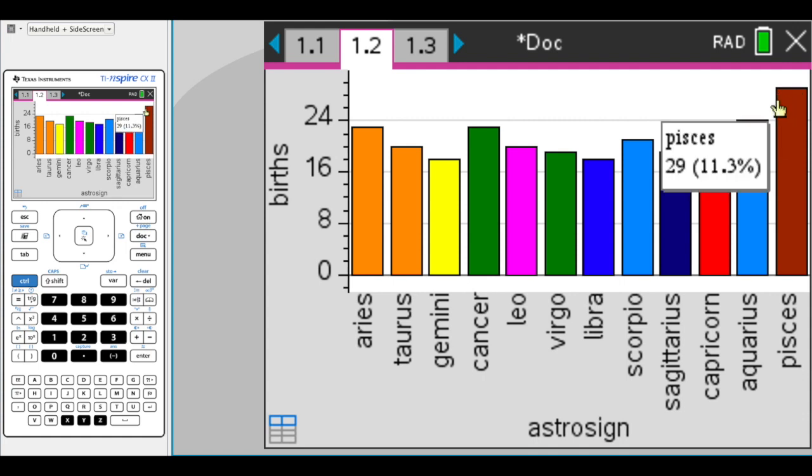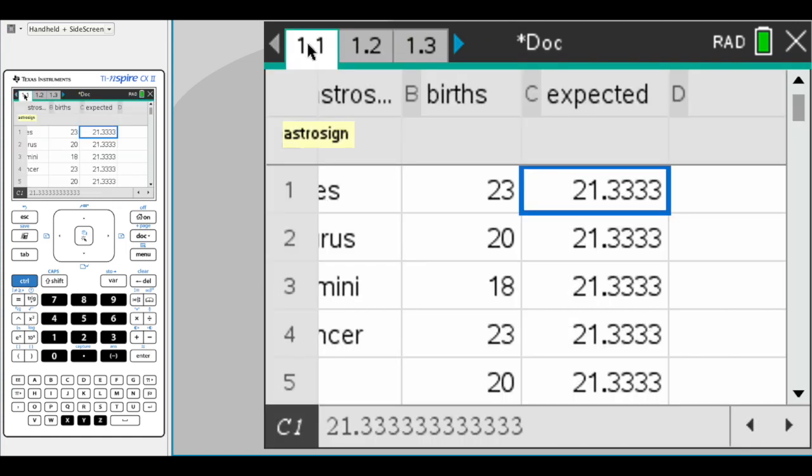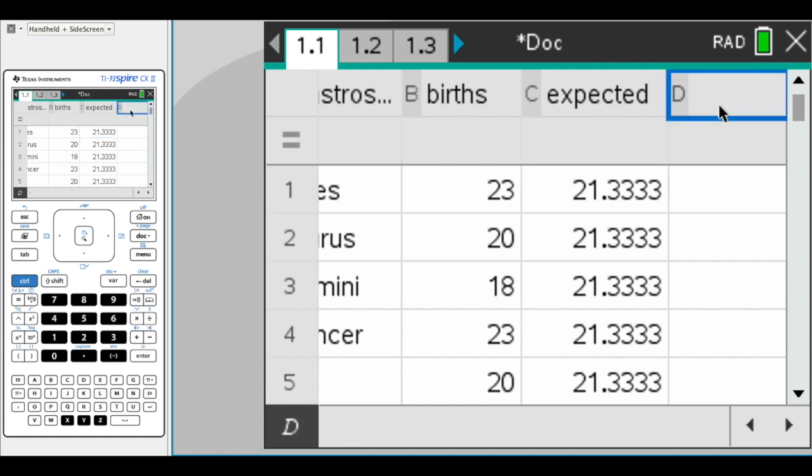So what we want to do is run through the calculation. We have our observed values, and we have our expected values. If we're doing a chi-squared goodness fit test, we would first want to calculate the residuals, so I'm just going to call it resid, and then in the column underneath, we're going to type in the formula here, and we're just going to hit equals, and it's going to be births minus expected.